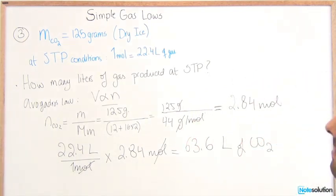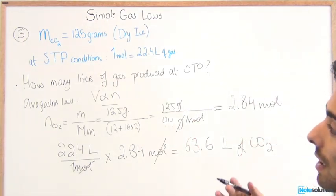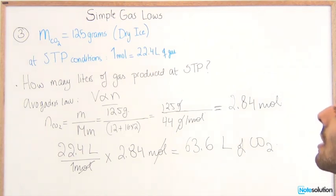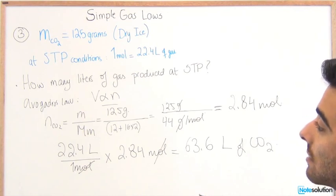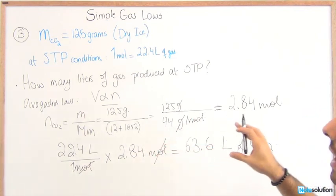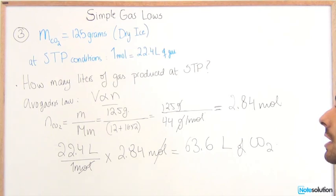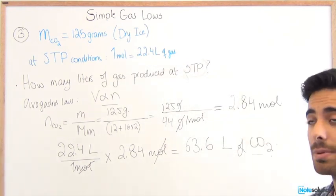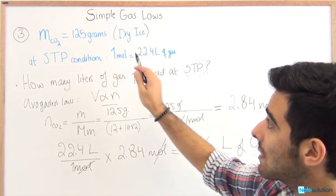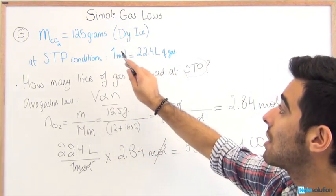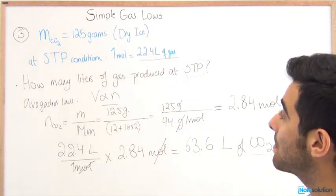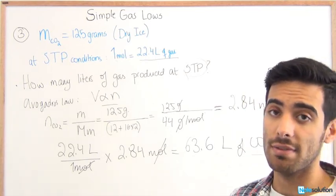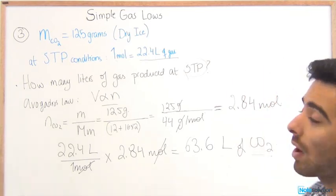There you go. We managed to use Avogadro's relationship that number of moles and volume are directly proportional. And we managed to figure out how much volume is present of carbon dioxide at STP. Remember you're going to see STP a lot. At STP conditions you have one mole of a gas gives you 22.4 liters. And STP conditions are temperature at 273 and pressure at one atmosphere.